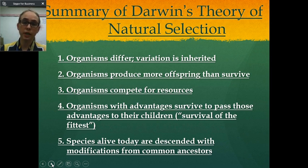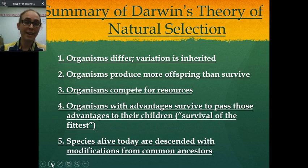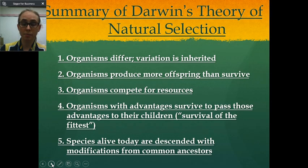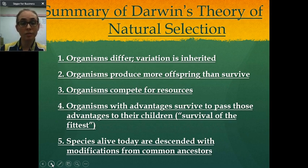The second component is that organisms produce more offspring than survive. Unfortunately, that is true — not all offspring that are born live. That is still true with humans, but not as true as with every other species due to medical advancements. Third, organisms compete for resources — resources being space to live, food, water, anything they would need for survival.